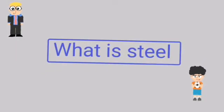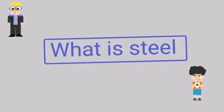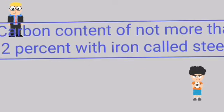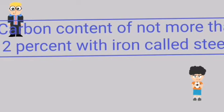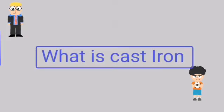So what is steel? Steel is a form of iron with a percentage of carbon. Carbon content of not more than 2% with iron is called steel. So with iron below 2% carbon, you consider it as steel.